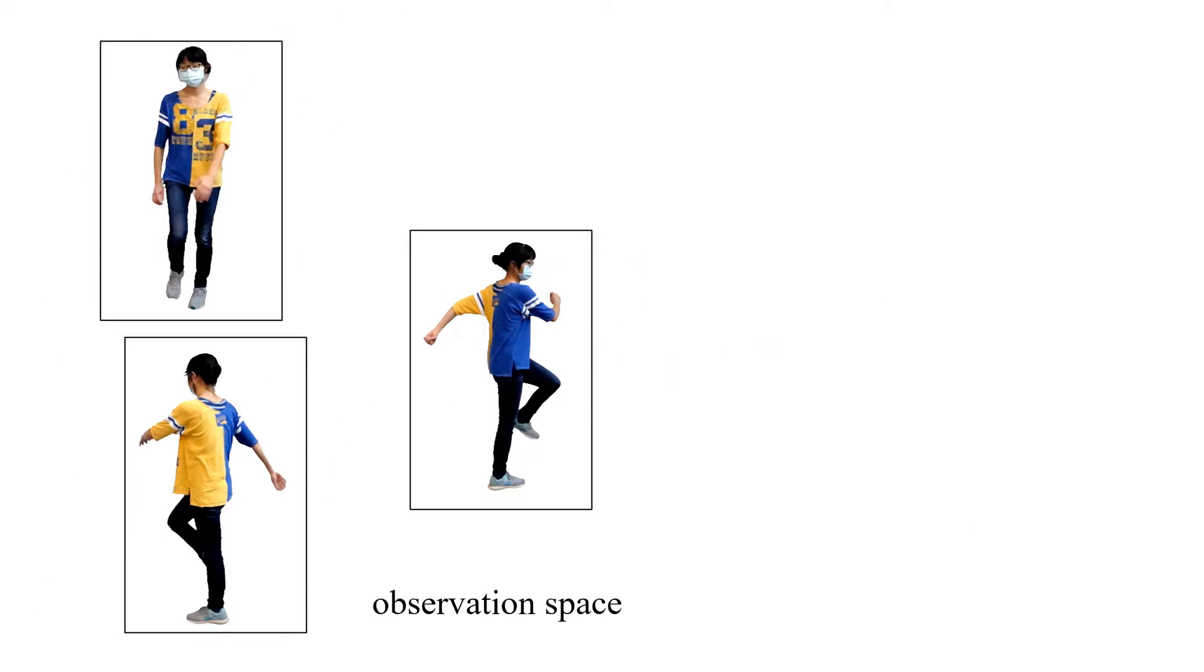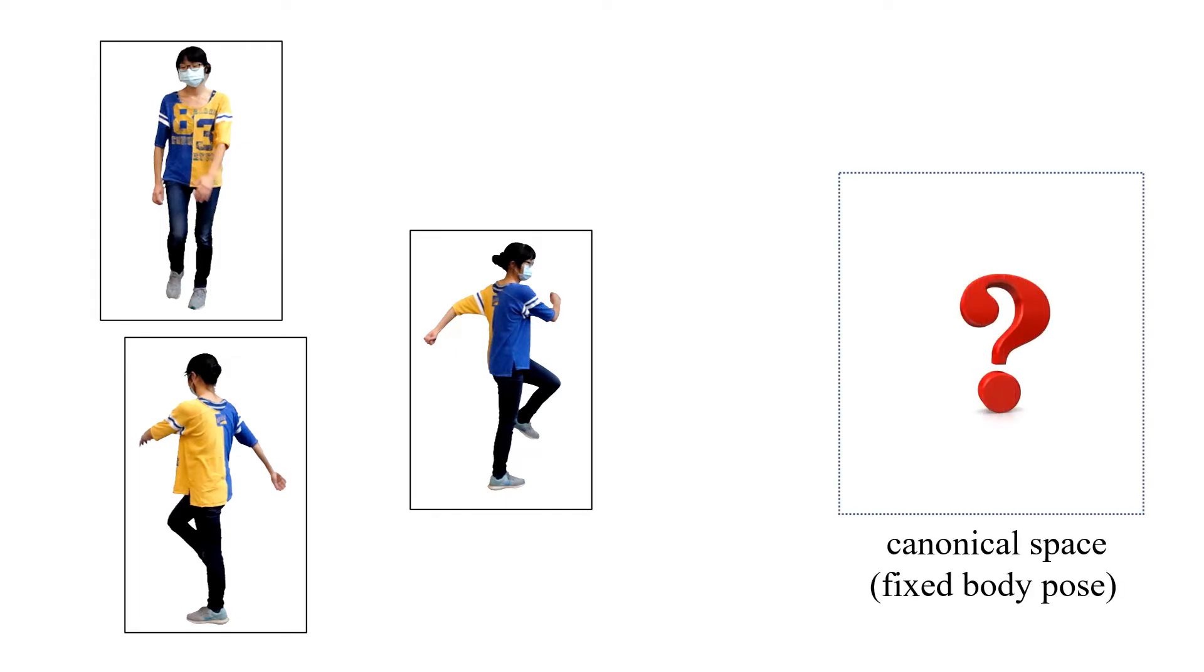To fuse these observations, we define two spaces. The first is an observation space where we directly see the subject with different body poses. The other one is a canonical space where the subject has a fixed predefined body pose. Our idea is, by solving for a mapping between the two spaces, we can aggregate pixels from different frames to rebuild the human model in the canonical space.